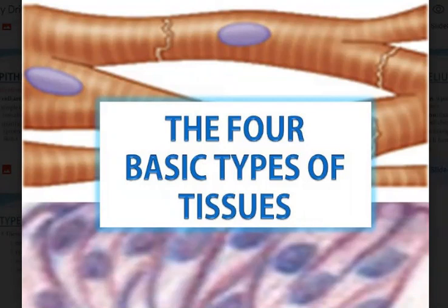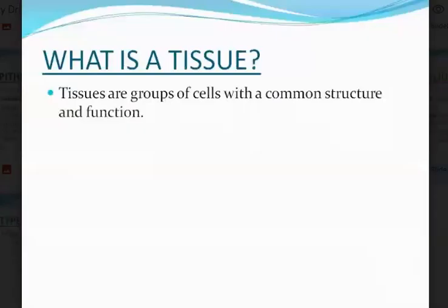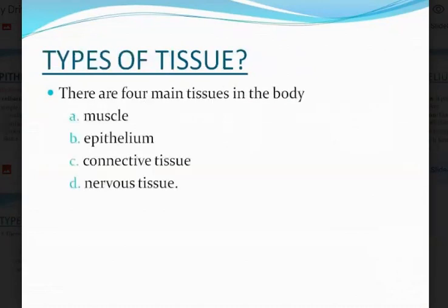In this video, I want to talk about the four basic types of tissues that we have in the body. Tissues are groups of cells with a common structure and function. There are four main types of tissues: muscle tissue, epithelium or epithelial tissue, connective tissue, and nervous tissue.